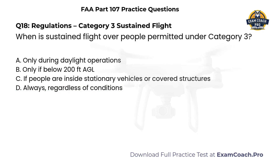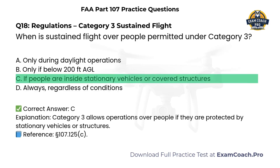Regulations. Category 3. Sustained flight. When is sustained flight over people permitted under Category 3? A. Only during daylight operations. B. Only if below 200 feet AGL. C. If people are inside stationary vehicles or covered structures. D. Always, regardless of conditions. Correct answer: C. Category 3 allows operations over people if they are protected by stationary vehicles or structures.